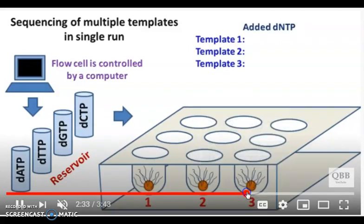The advanced version of pyrosequencing allows sequencing of different templates simultaneously. For this purpose, beads having different template DNA are kept in a picotiter plate. All the template DNA are PCR amplified and immobilized on a single bead. Each well of the picotiter plate will have a single bead with many copies of DNA. The picotiter plate is then kept in a flow cell where the reagents are added and flushed.